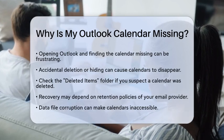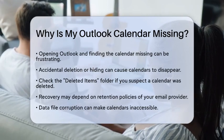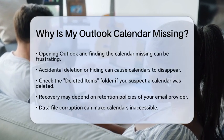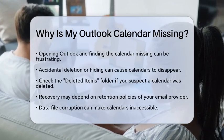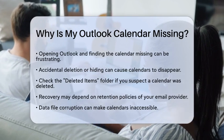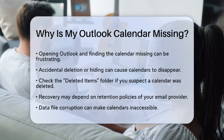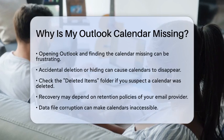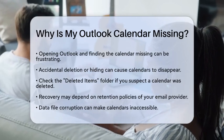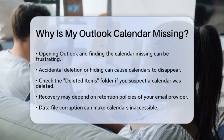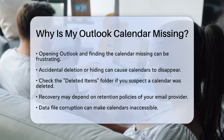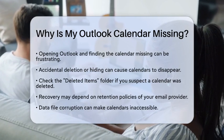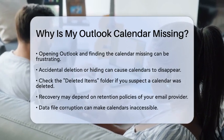First, let's consider accidental deletion or hiding. Sometimes calendars can disappear if they are accidentally deleted or hidden. In Outlook, calendars are stored within your mailbox or as separate data files. If you think you might have deleted a calendar, check your Deleted Items folder first. If it is not there, recovery may depend on the retention policies set by your email provider, like Outlook.com's Recoverable Items folder.